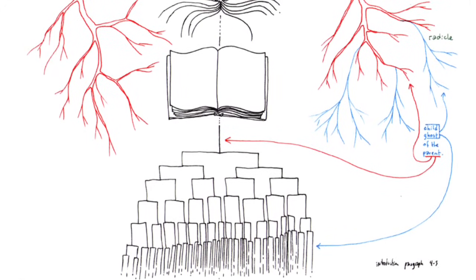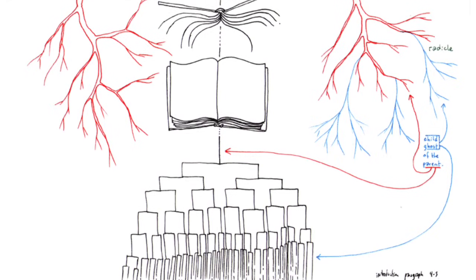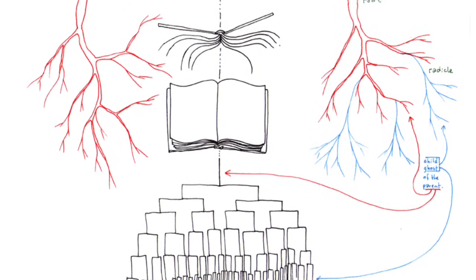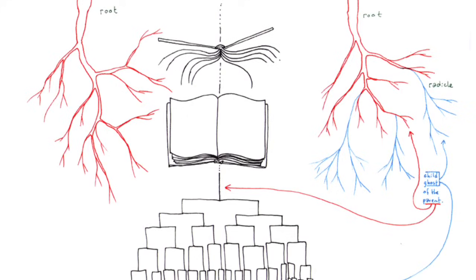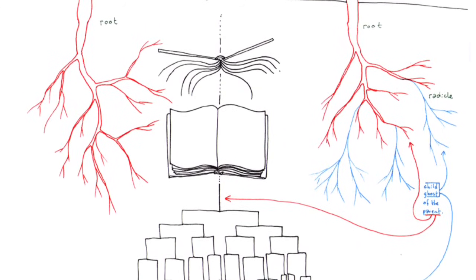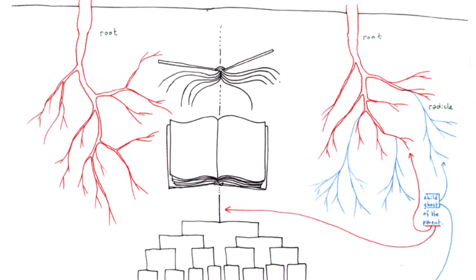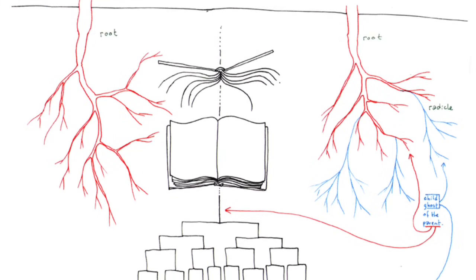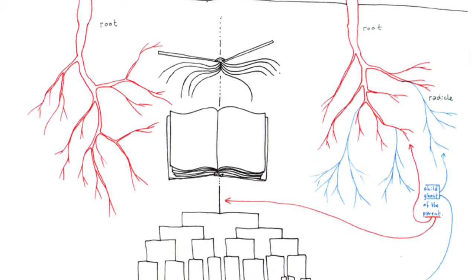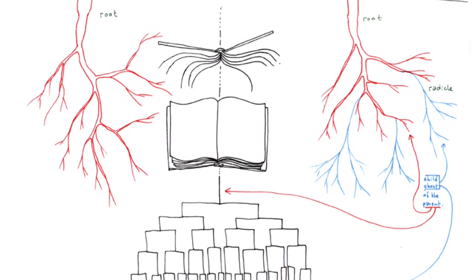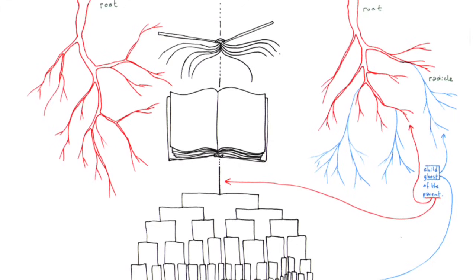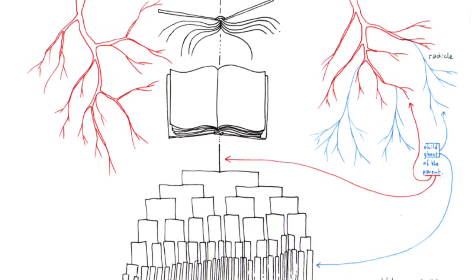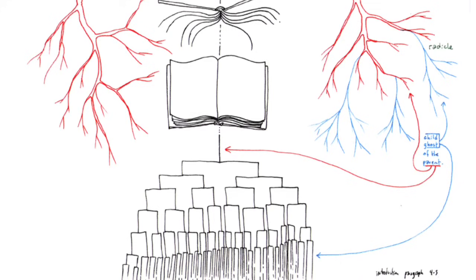Not by always adding a higher dimension, but rather, in the simplest of ways, by dint of sobriety, with the number of dimensions one already has available, n minus 1. The only way, the 1 belongs to the multiple. Always subtracted. Subtract the unique from the multiplicity to be constituted. Right at n minus 1 dimensions. A system of this kind could be called a rhizome. A rhizome, as subterranean stem, is absolutely different from roots and radicals. Bulbs and tubers are rhizomes. Plants with roots or radicals may be rhizomorphic in other respects altogether. The question is whether plant life and its specificity is not entirely rhizomatic. Even some animals are in their pack form. Rats are rhizomes. Burrows are too.